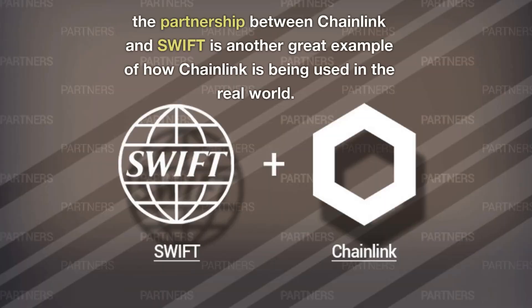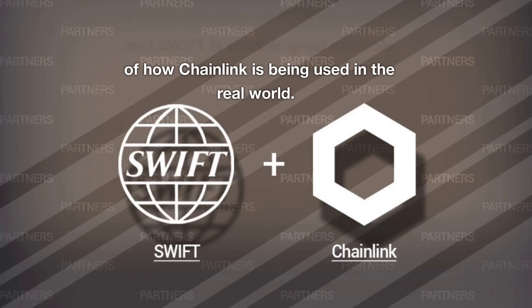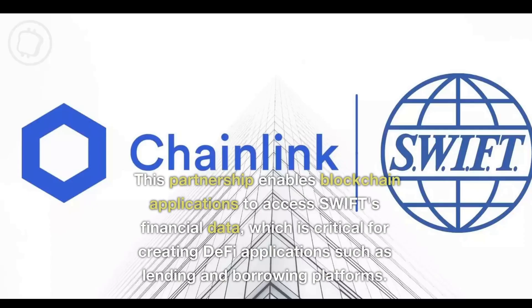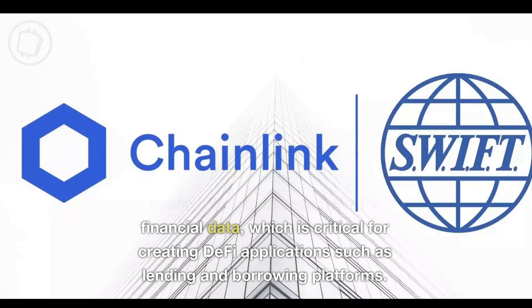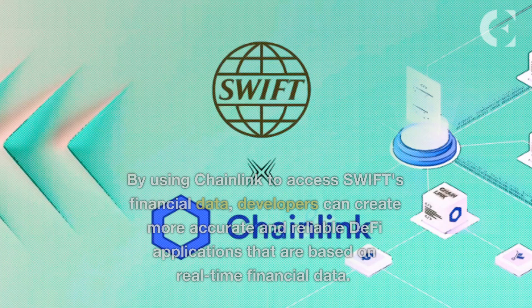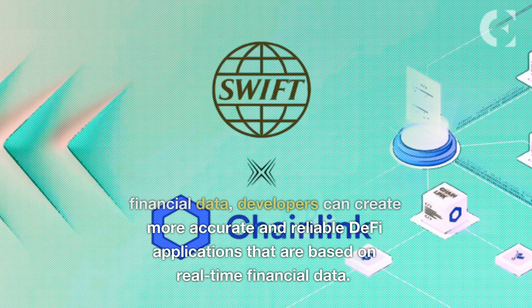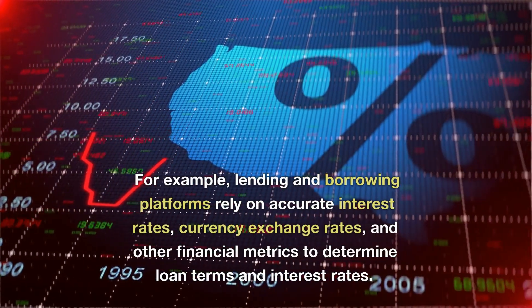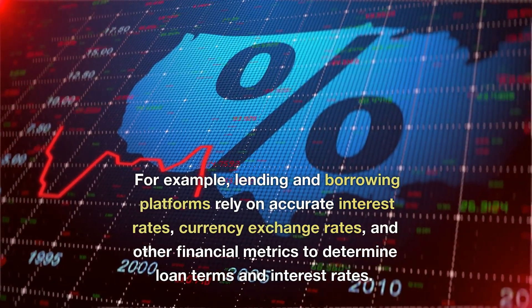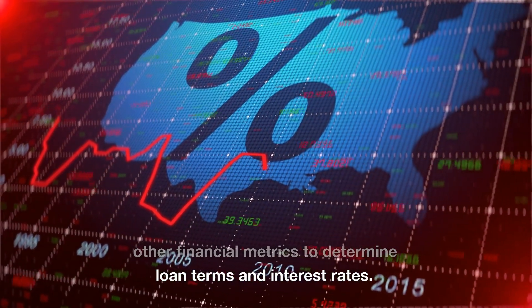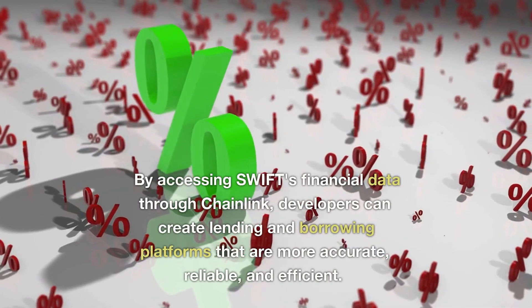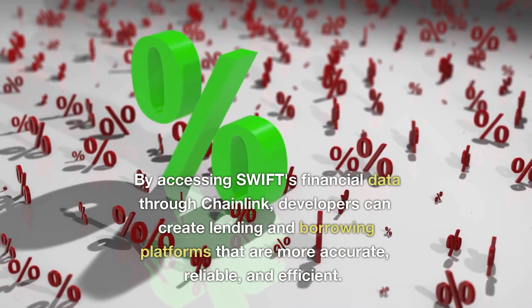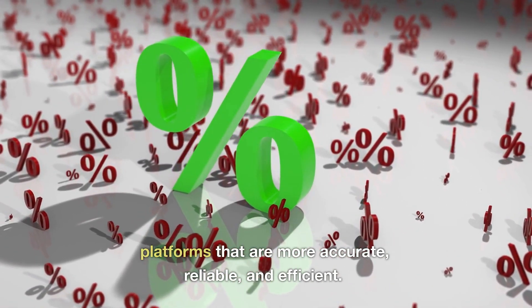The partnership between Chainlink and Swift is another great example of how Chainlink is being used in the real world. This partnership enables blockchain applications to access Swift's financial data, which is critical for creating DeFi applications such as lending and borrowing platforms. By using Chainlink to access Swift's financial data, developers can create more accurate and reliable DeFi applications based on real-time financial data. For example, lending and borrowing platforms rely on accurate interest rates, currency exchange rates, and other financial metrics to determine loan terms and interest rates. By accessing Swift's financial data through Chainlink, developers can create lending and borrowing platforms that are more accurate, reliable, and efficient.